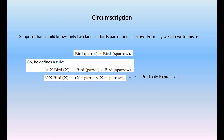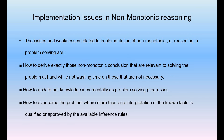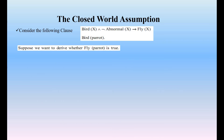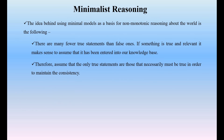One more example of circumscription: suppose a child knows only two kinds of birds — parrot and sparrow. Formally we can write this as: bird(parrot) or bird(sparrow), and for all x, bird(x) implies x equals parrot or x equals sparrow — a predicate expression. This is the circumscription form. So this covers both circumscription and closed world assumption within minimalist reasoning.